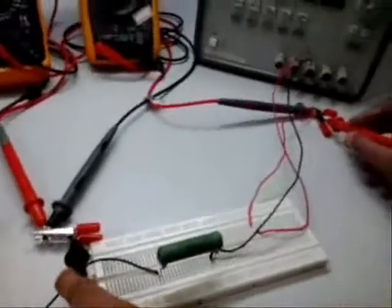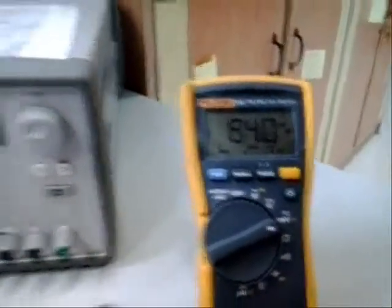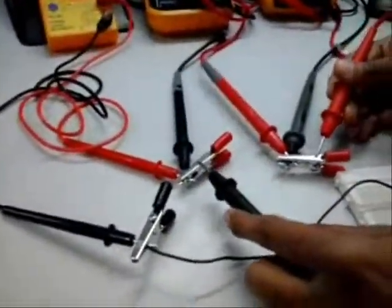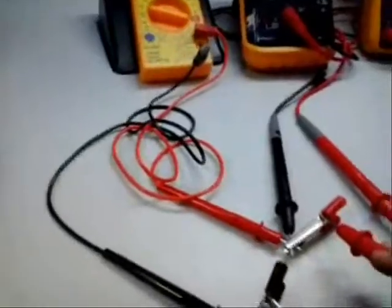So now let us measure one by one, the voltage drop across Fluke. It is nearly 84. Let us measure voltage drop across Valtek. It is 284.